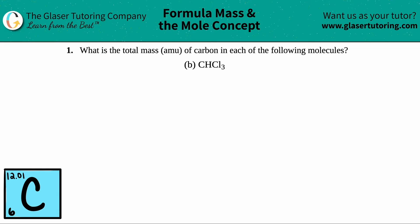Number one: what is the total mass in AMU of carbon in each of the following molecules? And then we have letter B. So in this case, we have to find the total amount in AMU of carbon in CHCl3.